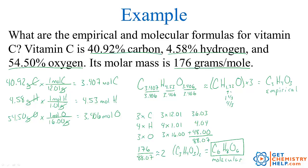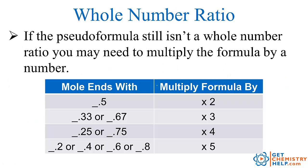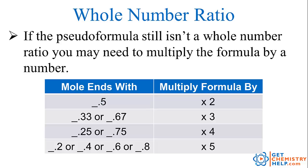There are only a few cases where it won't work out to a whole number. If a decimal ends in .5, that's a half — multiply the whole formula by 2. If it's .33 or .67, that's a third or two-thirds — multiply by 3. If it's .25 or .75, that's a fourth or three-fourths — multiply by 4. If it's .2, .4, .6, or .8, those are fifths — multiply by 5. In our next video, I'll work several more practice problems on using percent composition to find the empirical formula. See you back at GetChemistryHelp.com!